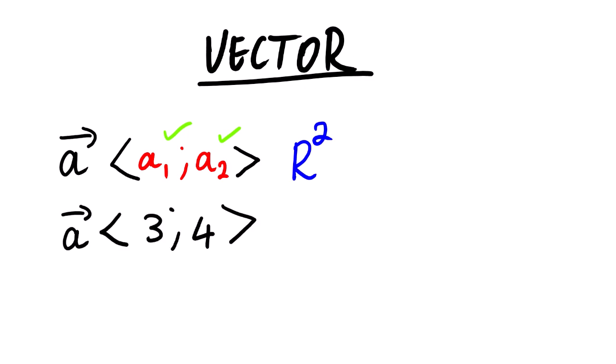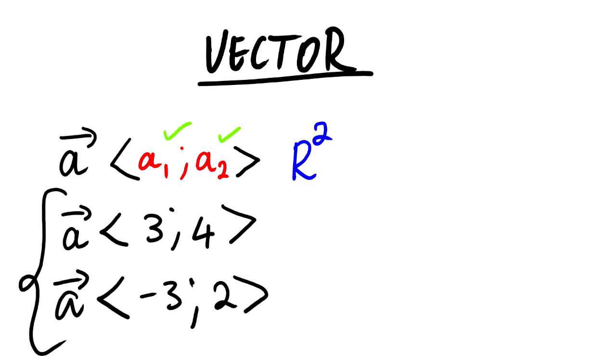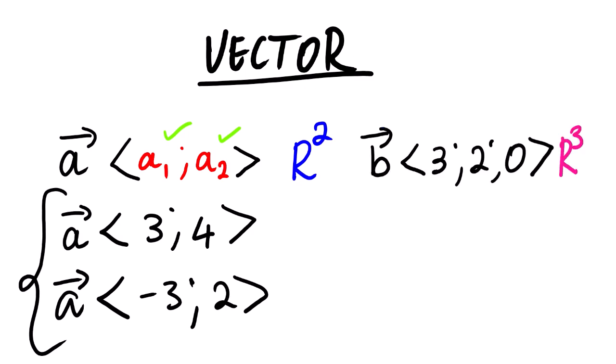A practical example of a two-space vector is something like this — so we say these are two-space vectors. Vector b consists of three coordinates. We say this is a three-space vector or a three-dimension vector. This basis can go on and on — we can have R4, R5, R6, R7.